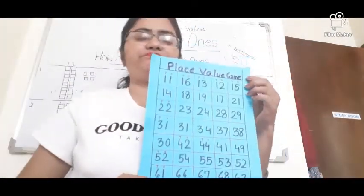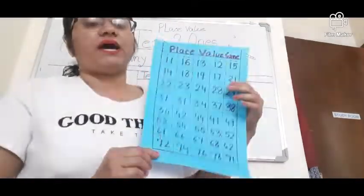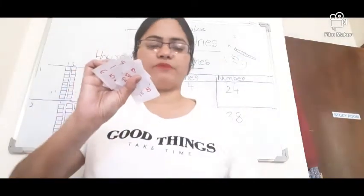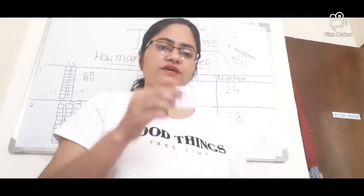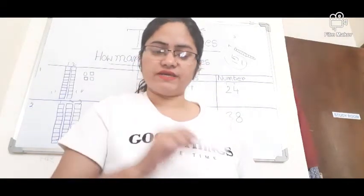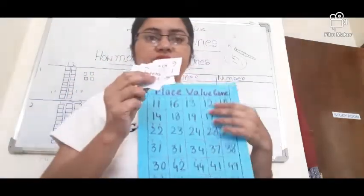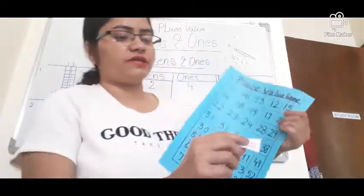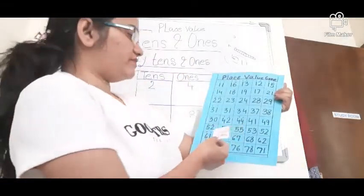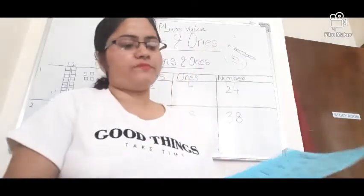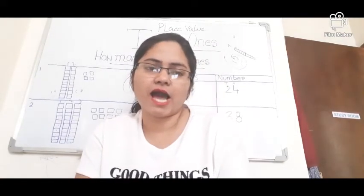Today I will show you a place value game. I've written some numbers on the page in a jumbled way. I cut pieces of paper and wrote on them things like '4 tenths, 2 ones' or '3 tenths, 1 ones.' You have to read the piece of paper and find the matching number on the page. For example, '4 tenths, 2 ones' means 4 is the tens place and 2 is the ones place — the number is 42. You paste the piece over the matching number. You can make this at home — it's fun and teaches place value.